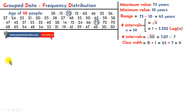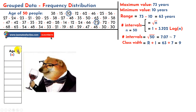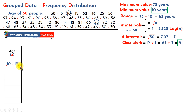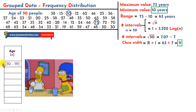Now we are going to build the table. The variable x in this case is age, and I place 7 rows because there are 7 intervals. The first interval starts from the minimum value. The class width is 9, which means the first interval goes from 10 to 19 years. We use a bracket on 10 because we are going to include those who are 10 years old. I place a parenthesis on 19 because I'm not going to count those who are 19 years old.